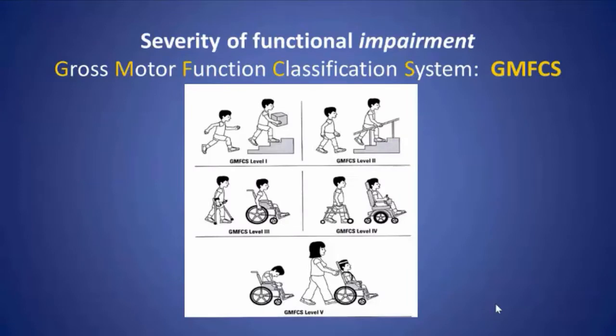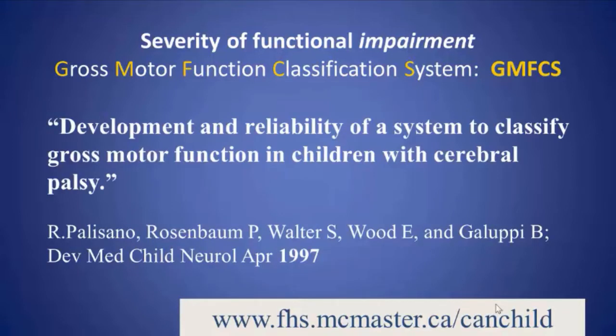The GMFCS — Gross Motor Function Classification System — has become an important part of managing patients with cerebral palsy because it gives us a handle on how severe they are. It goes from the mildest, who manifest minimal gait and functional abnormalities classified at GMFCS level 1, through the most severe, who require total care and are unable to even control a power wheelchair.